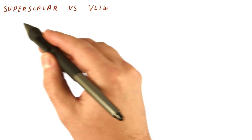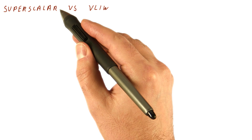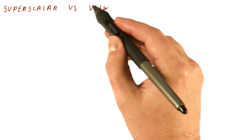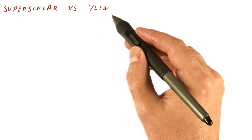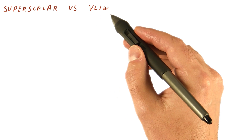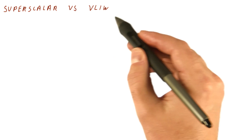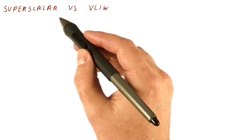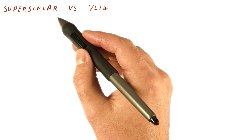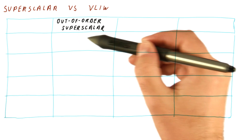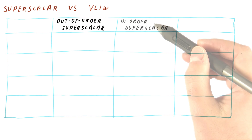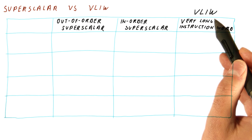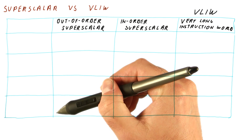In previous lessons we have seen that a superscalar processor will try to execute more than one instruction per cycle. VLIW processors are trying to achieve the same amount of work per cycle, but in a different way. So let's compare the two approaches and see how VLIW processors differ from the out-of-order and in-order superscalar processors, according to several things.